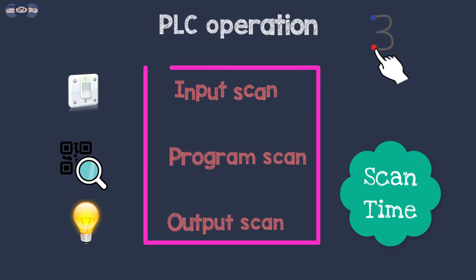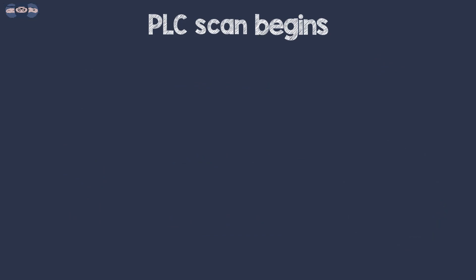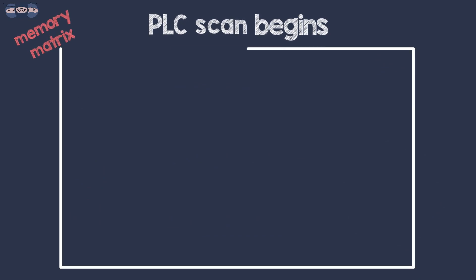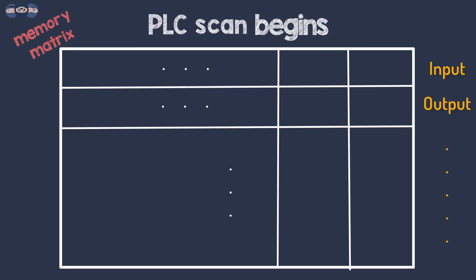The scan time is how long it takes the PLC to loop around the whole process back to the start. When the PLC scan begins, it maps the memory matrix for input and output. A discrete input can be designated by I and a discrete output by O, though this depends upon the PLC designer and manufacturer.